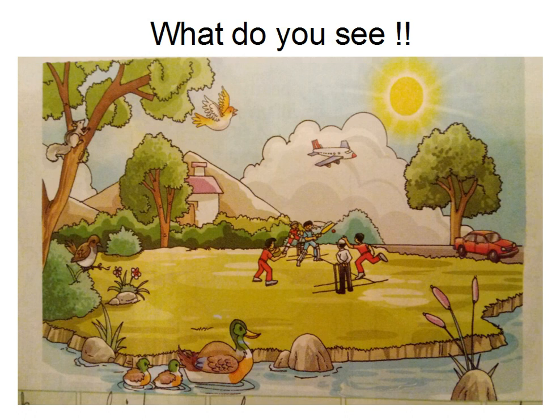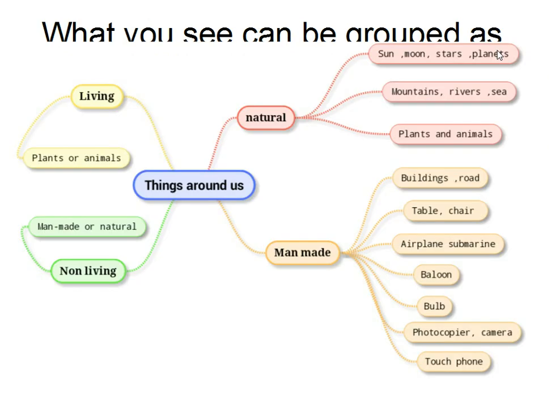What does all this mean? What you can see around can be grouped in very many ways. Some of them are natural, some of them are man-made, some of them are living, and some of them are not living.